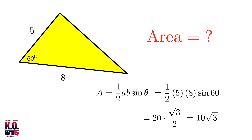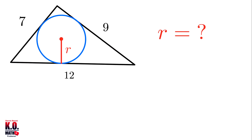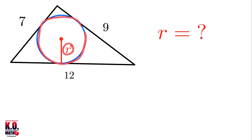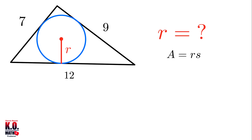Now let's move to the next problem. Here we're given the three sides of a triangle and we want to find the radius of the inscribed circle, also called the incircle. We can use the formula: area of the triangle equals the inradius r times s, where s is the semi-perimeter — that is, half of the perimeter: s equals (a plus b plus c) over 2.